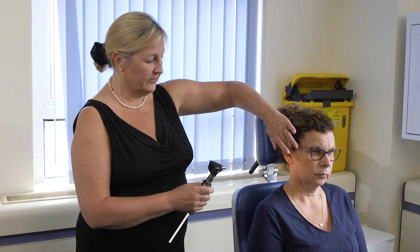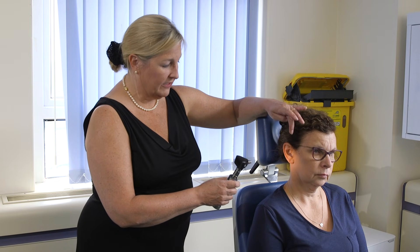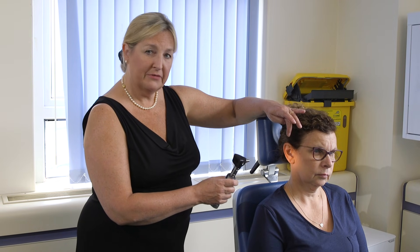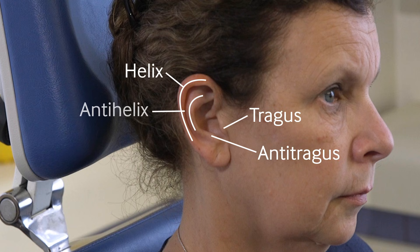When you decide that you're going to examine the ear, first of all we go to examine the external ear, and this consists of the pinna. Just to recap the anatomy of the pinna: there's the tragus, the anti-tragus, the helix, the anti-helix, and of course the ear lobe.